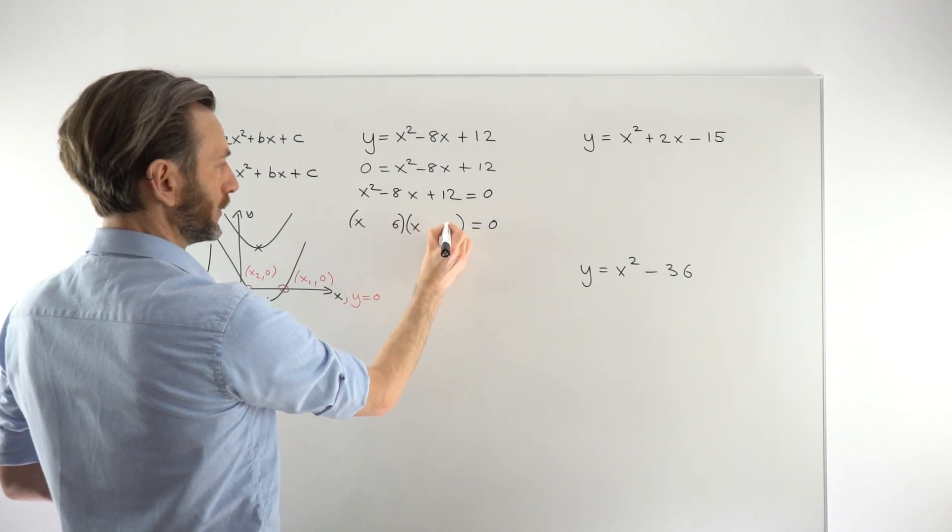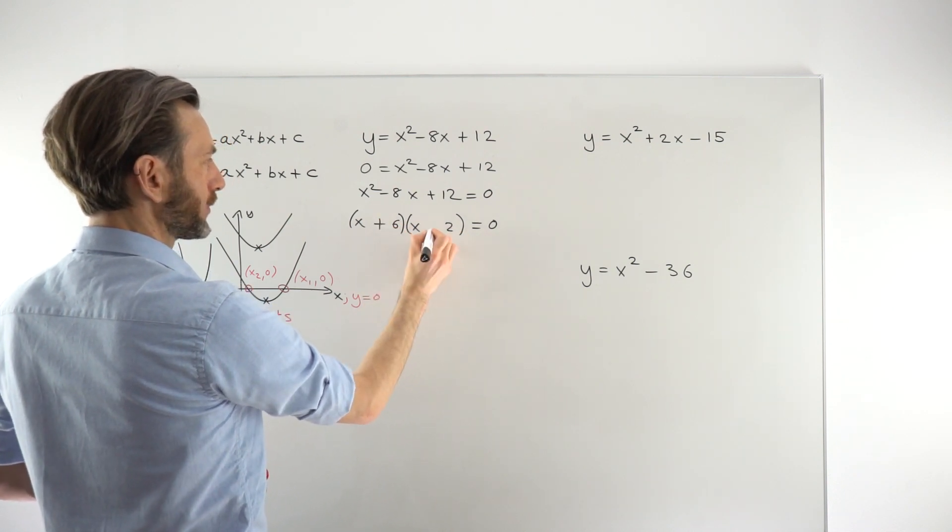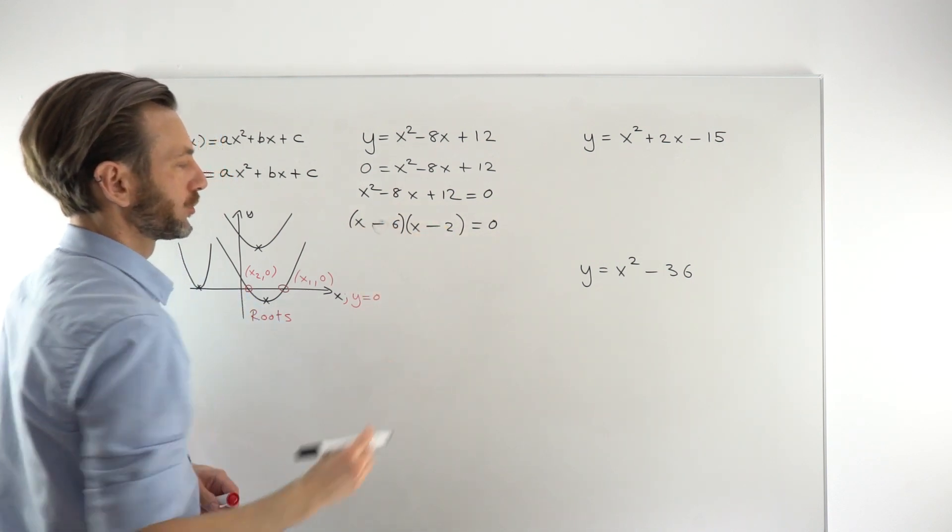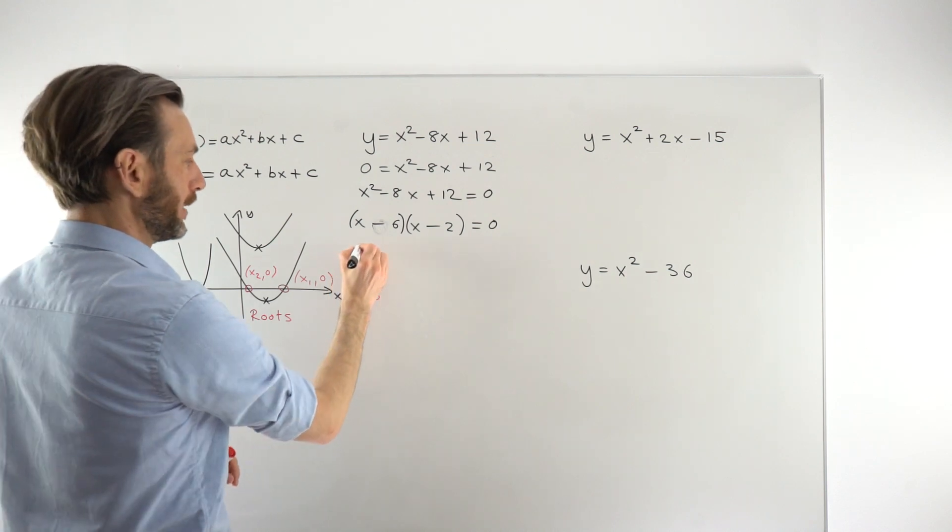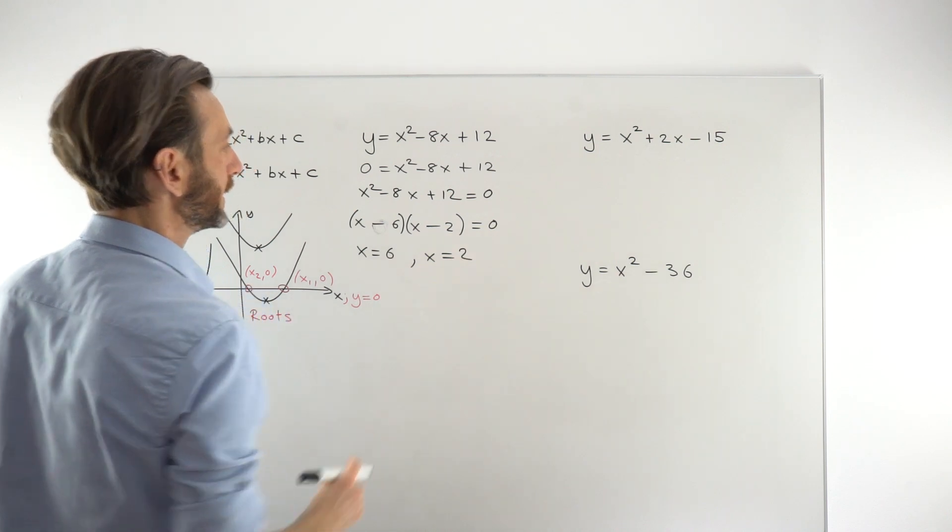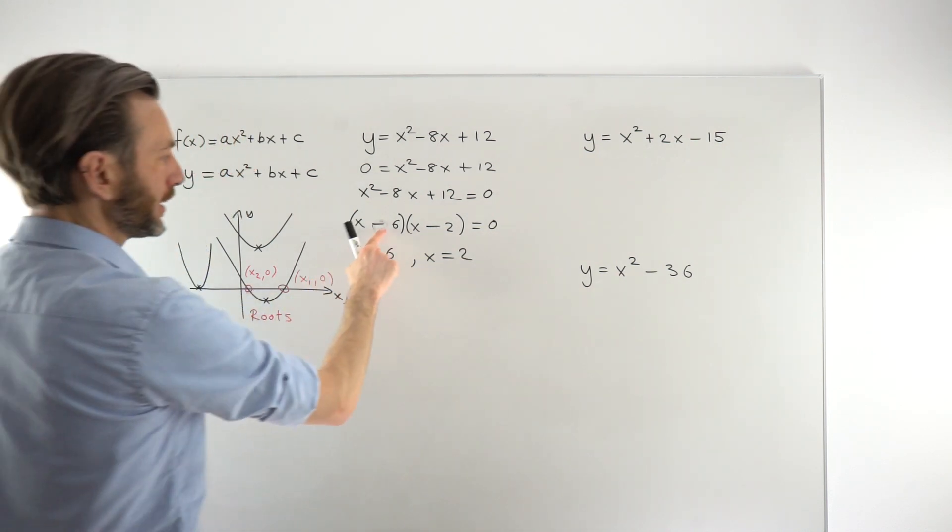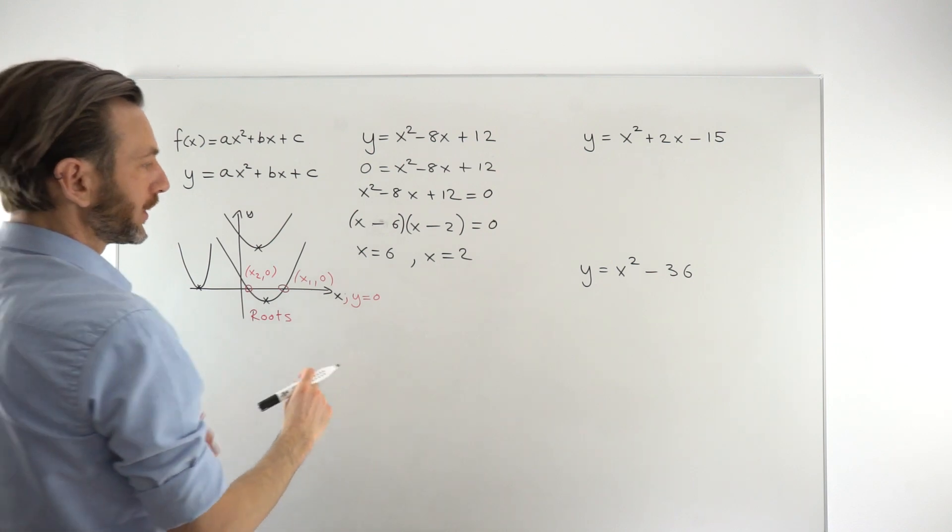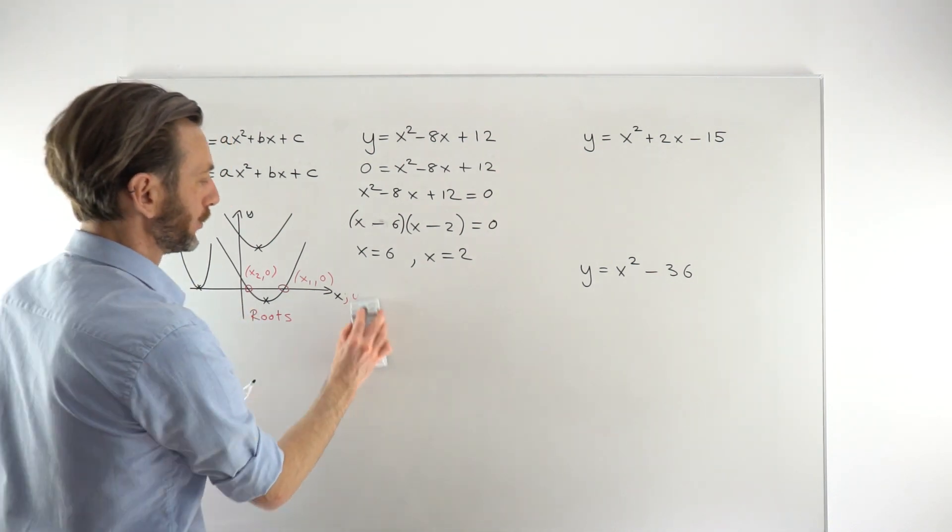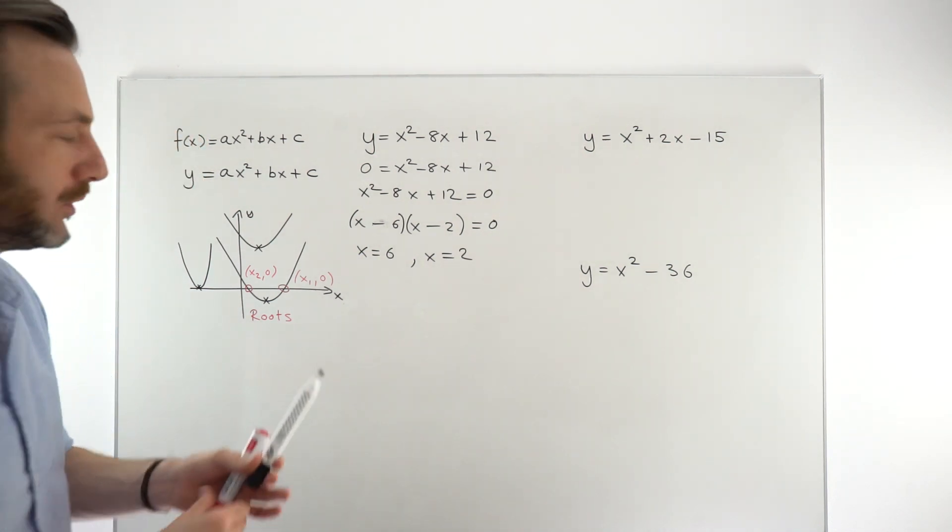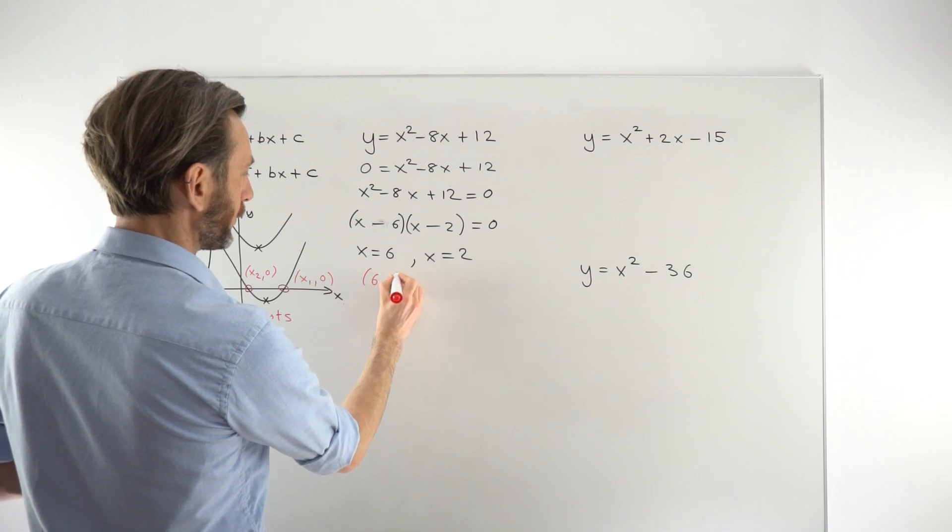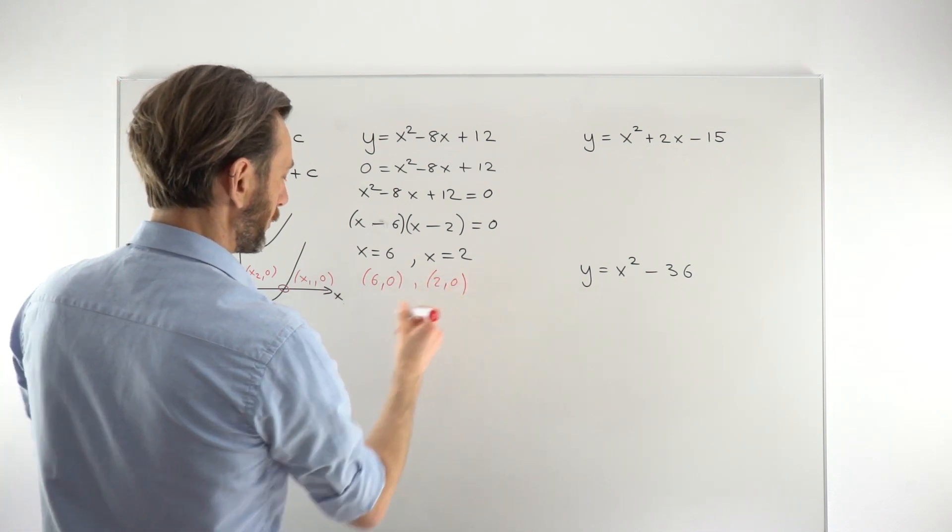So this one would factorize with a 6 and a 2 and a minus and a minus. So minus 6, minus 2. And then solving that to get a plus 6 and a plus 2. So now that we've got those, we know that we can make coordinate pairs, because we know that to find those, we had already let the y value be 0. So that means that we're going to get coordinates 6, 0 for one of the roots and 2, 0 for the other root.